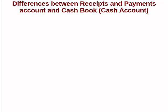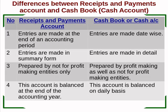The receipt and payment account is prepared by a not-for-profit organization, whereas the cash book is prepared by not-for-profit organizations as well as profit-seeking organizations. The receipt and payment account is balanced at the end of the accounting year, and its balance represents the cash book balance — the balance between cash and bank.